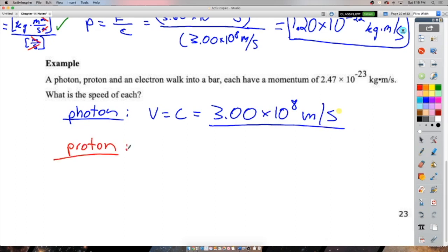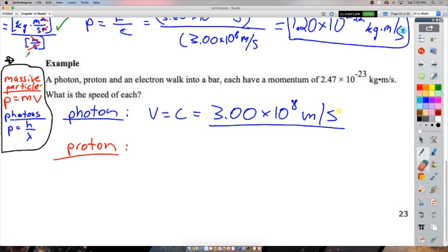For a proton, just a reminder. For massive particles, momentum is mass times velocity. For non-massive particles, like photons, momentum is h over lambda. This is very important to remember. Never use this for an electron or proton. Never use this for a photon because you'll always get zero for that top one. So that means for a proton, and then just plugging in the mass of a proton on the back of your formula sheet.